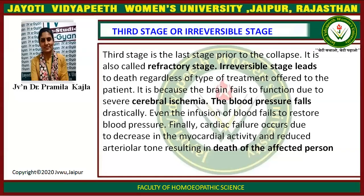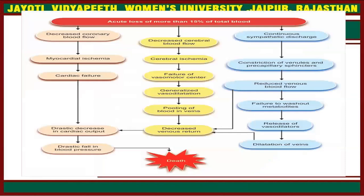The third stage is the irreversible stage, also called the refractory stage. It is the last stage prior to collapse. The irreversible stage leads to death regardless of the type of treatment offered. This is because the brain fails to function due to severe cerebral ischemia. Blood pressure falls drastically, and even infusion of blood fails to restore blood pressure. Finally, cardiac failure occurs due to decrease in myocardial activity and reduced vasomotor tone, resulting in death. In this diagram we can see acute loss of more than 15% of total blood, which causes decreased coronary blood flow, myocardial ischemia, cardiac failure, drastic decrease in cardiac output, and drastically falling blood pressure, leading to death.